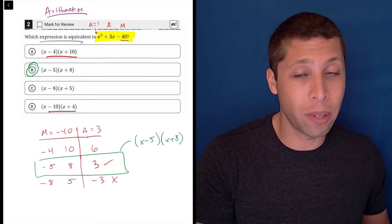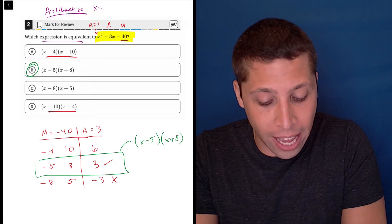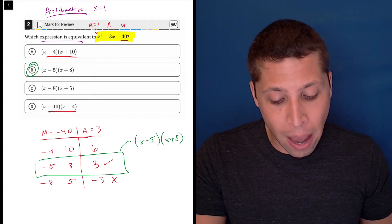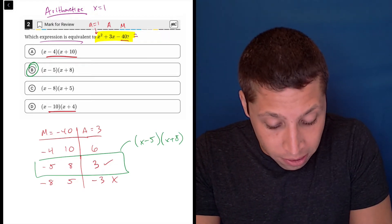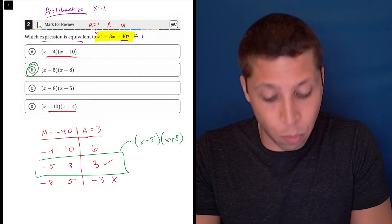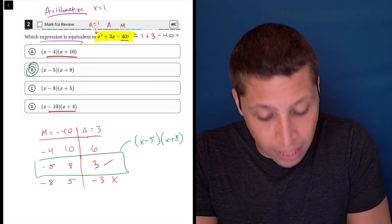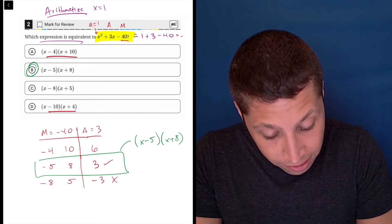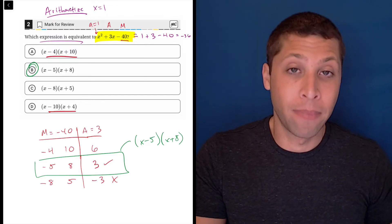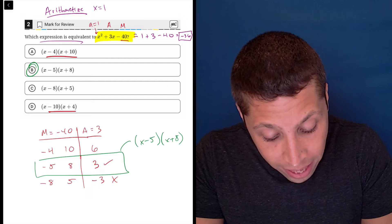And so that's what we could do in this case. We could just pick something like x is equal to one. And that would let us solve this expression. So one squared is one, three times one is three minus 40. So that's four minus 40 is negative 36.